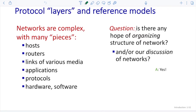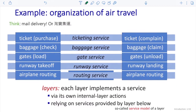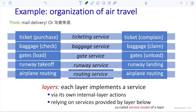So is there any hope of organizing the structure of a network? Experts provided the concept of layers to modularize different functionalities of the network structure. They gave us a reference model, where theoretically those functionalities can be divided into different layers, and we combine these layers to construct the entire internet. Before going into the detailed discussion of the reference model, the textbook provides an example of layering, but I think mine is better.